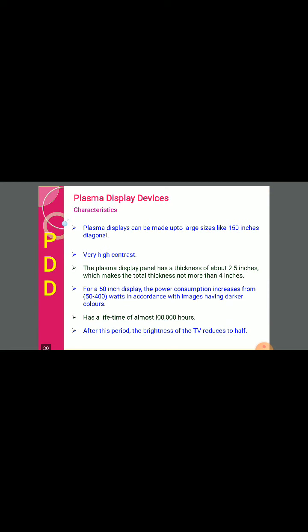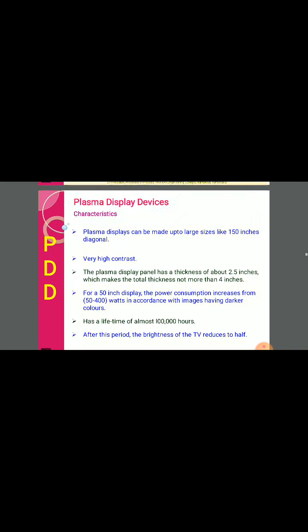Plasma display characteristics: plasma displays can be made up to large sizes like 150 inches diagonal. They have very high contrast. The plasma display panel has a thickness of about 2.5 inches, making the total thickness not more than 4 inches. For a 50-inch display, power consumption ranges from 50 to 400 watts depending on image brightness. It has a lifetime of almost 1 lakh hours, after which the brightness of the TV reduces to half.